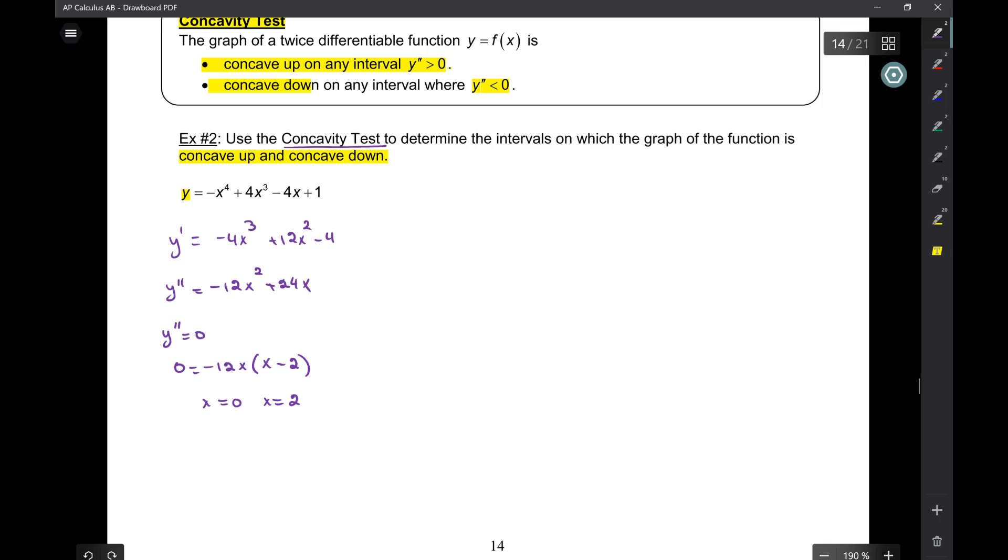Don't call these critical points. Critical points are where what equals 0? The first derivative. This is the second derivative. Later, they might get qualified to be called something, but not yet. We don't know yet if they're going to qualify to get a special name.